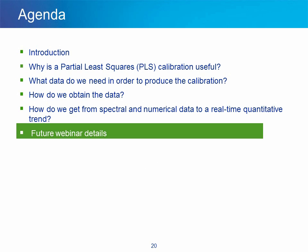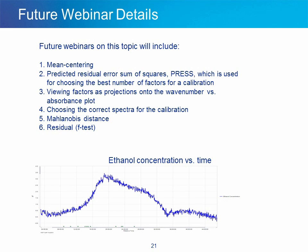Future webinars on this topic will include mean centering, predicted residual error sum of squares (PRESS) which is used for choosing the best number of factors for calibration, viewing factors as projections onto the wave number versus absorbance plot, choosing the correct spectra for the calibration, the Mahalanobis distance, and the residual or F test. Thank you for joining us today. We hope you have enjoyed this discussion on the exciting and useful topic of factor analysis. We would be delighted to hear your comments and questions.